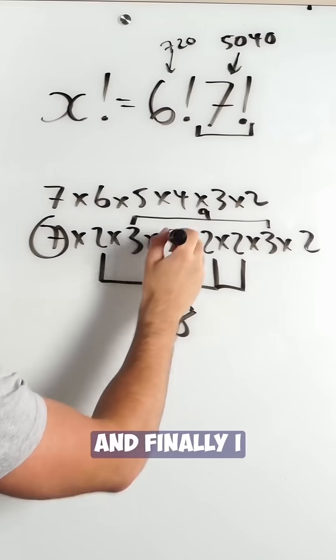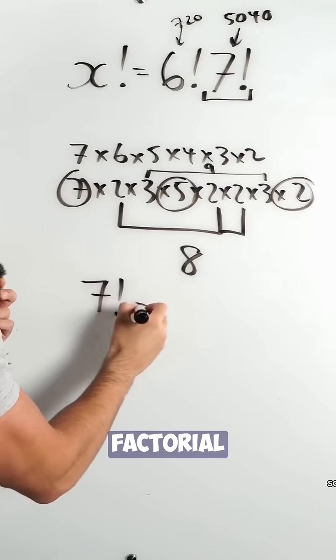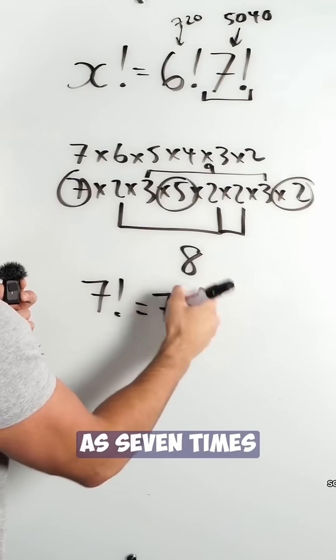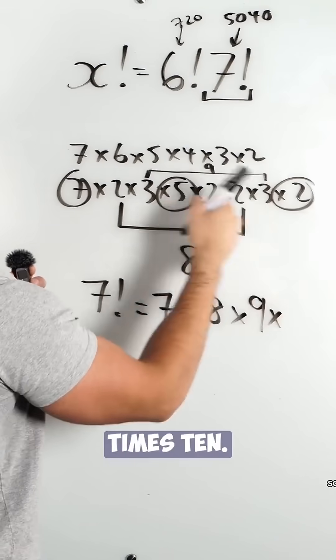And finally, I can see 10. So I can rewrite 7 factorial as 7 times 8 times 9 times 10.